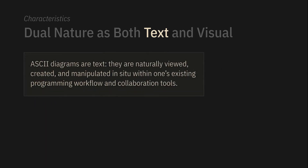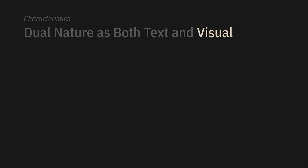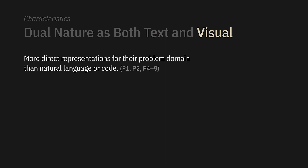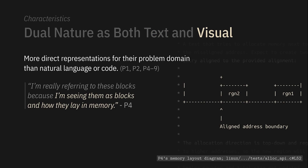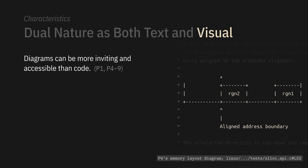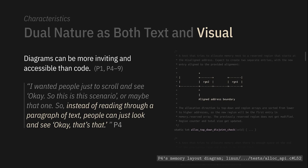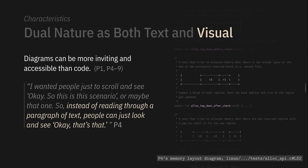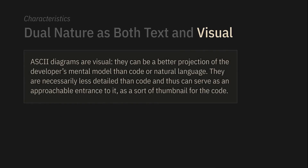To summarize, because ASCII diagrams are text, they're naturally viewed, created, and manipulated within the wide range of existing programming workflows and tools. The second characteristic is, of course, that they resemble something visual. This makes it much easier to represent some problem domains. For P4, they were really imagining these blocks as something spatial. Interestingly, diagrams were also used as an entry point into the code — P4 made memory layout diagrams above test cases so that instead of reading through a paragraph of text, people can just look at them. Because they're visual, they might better capture the developer's mental model and can serve as a thumbnail for the code to make it more approachable.